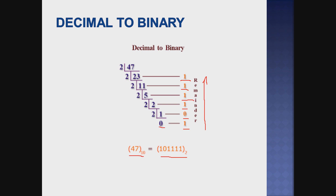So that is 1 0 1 1 1 1 base 2. If you write from downwards to upwards, you get the remainder values. Downwards is the most significant bit, and upwards is the least significant bit. Therefore, 47 base 10 can be written as 1 0 1 1 1 1 base 2. This is the conversion of decimal to binary — very simple.